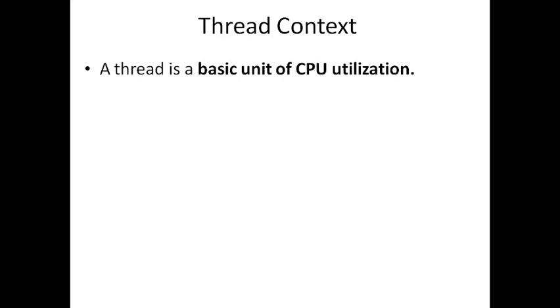Just like processes have their own context, threads also have their own context. A thread is a basic unit of CPU utilization. So far we were saying that the process is the unit of execution, but since threads have now become available, it is no longer the process but the thread. So thread is the basic unit of CPU utilization—the smallest unit that can be executed on a CPU are now threads.